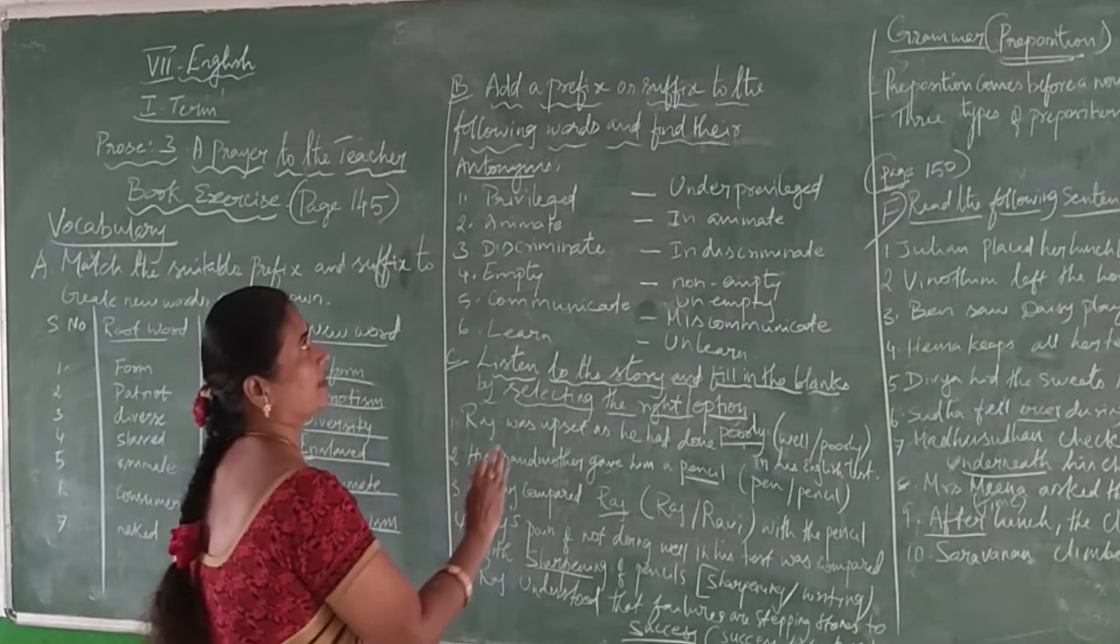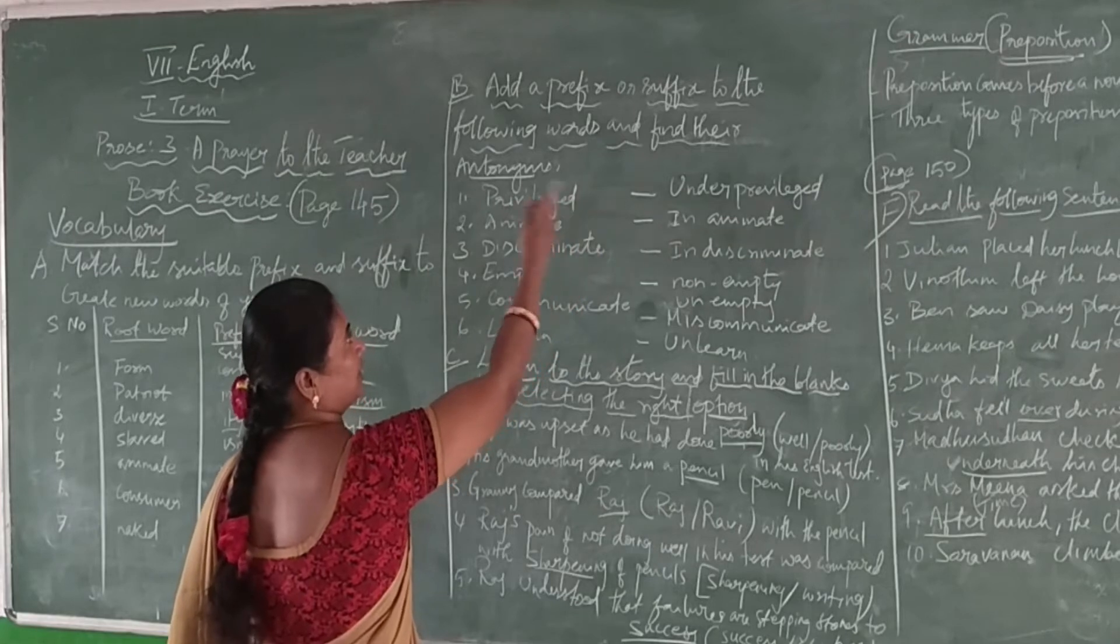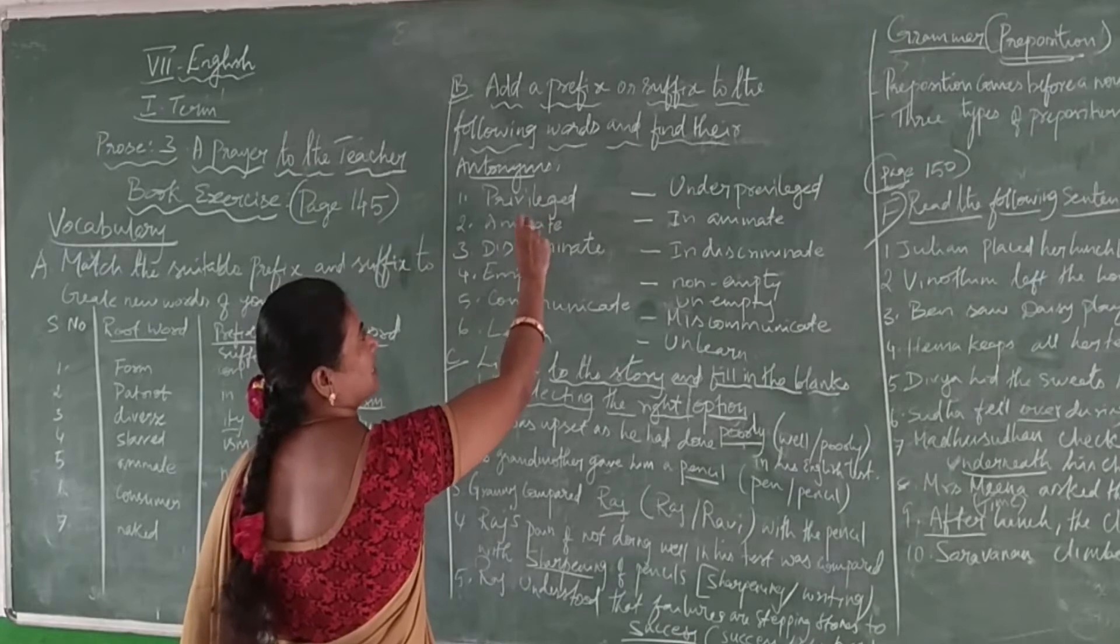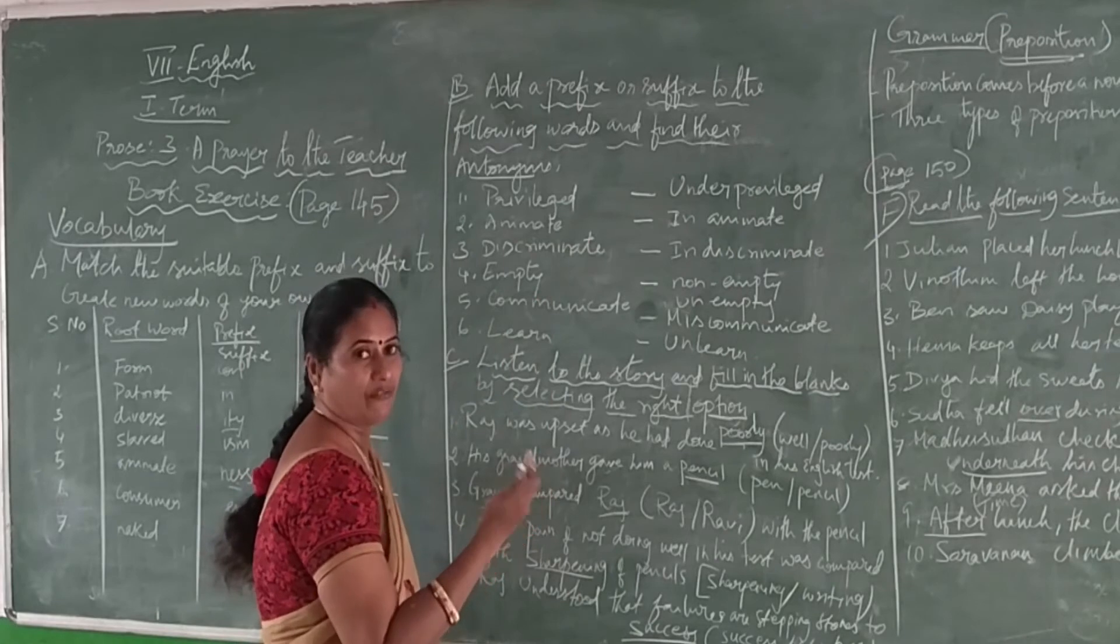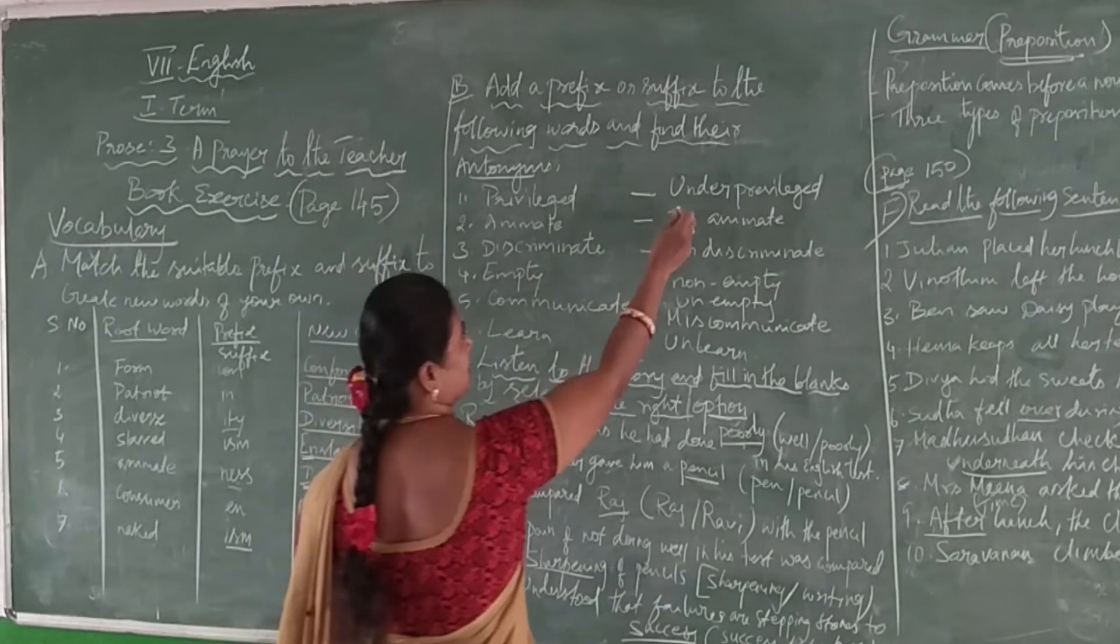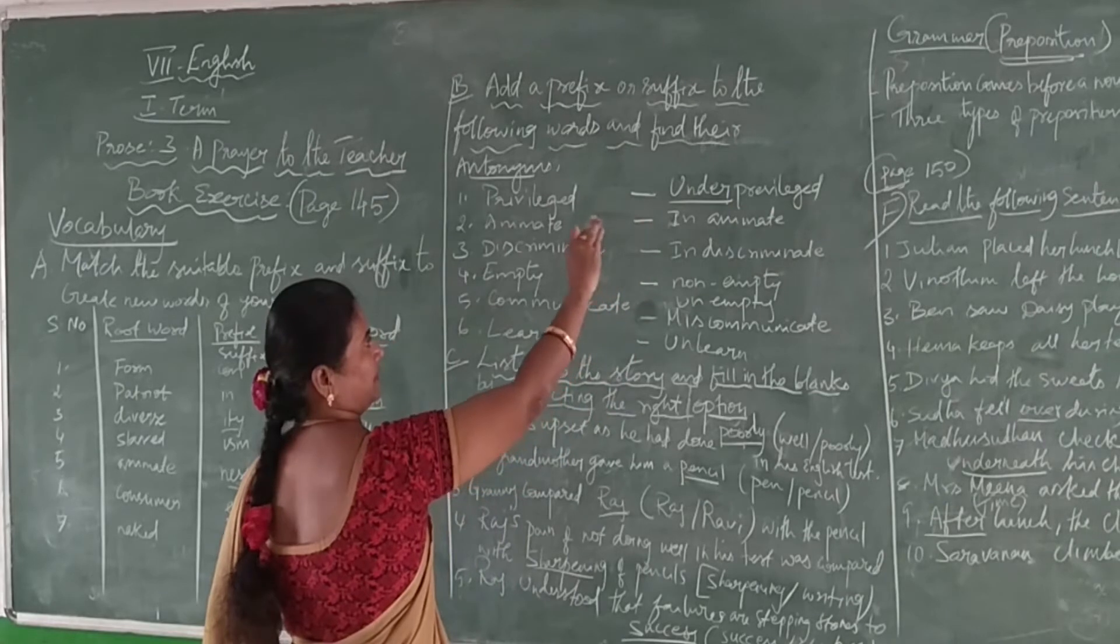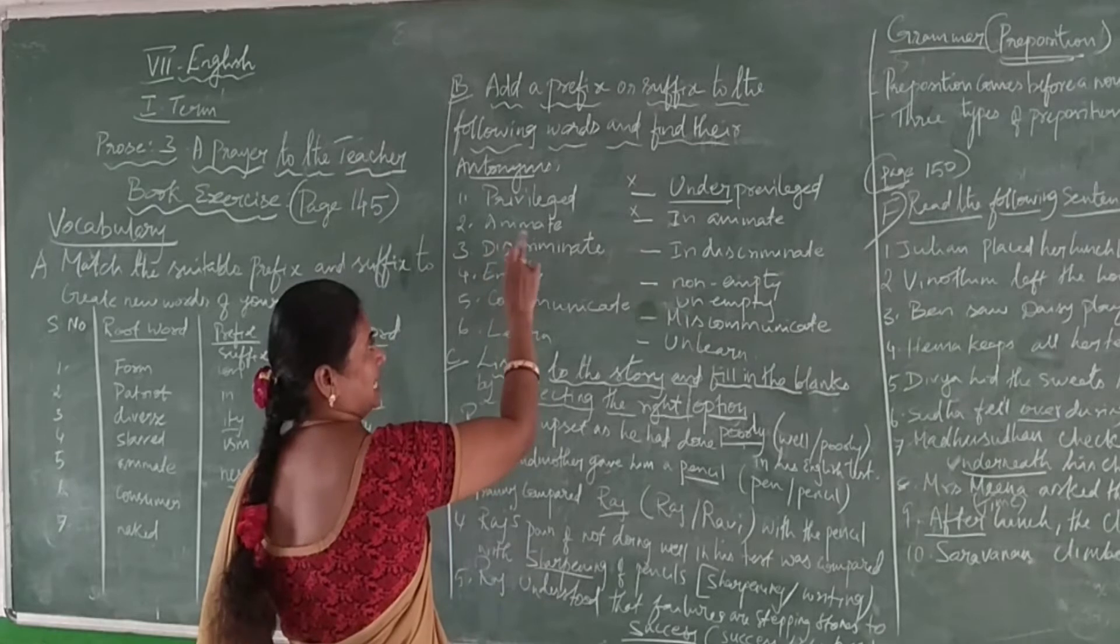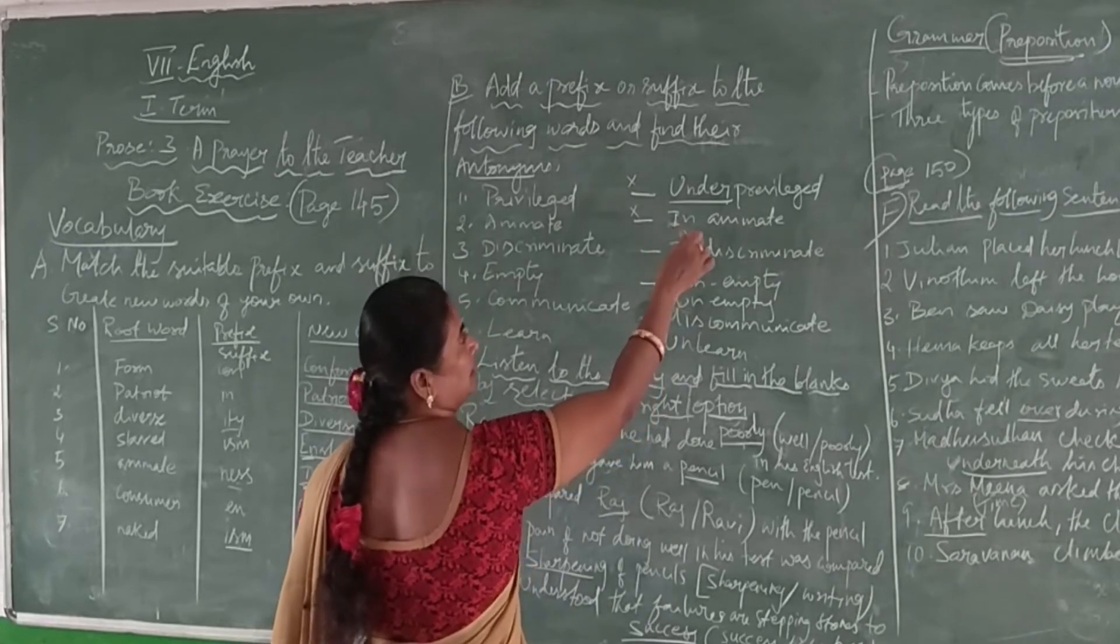Exercise 2: Add your prefix or suffix to the following words and find out their antonyms. That is, 'privilege' - the antonym is 'underprivilege', the prefix word. 'Animate' - opposite is 'inanimate', and it should be the prefix word.